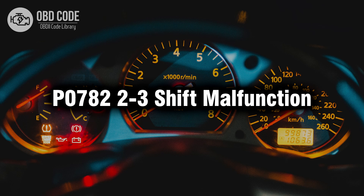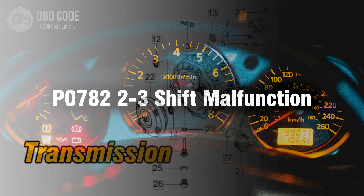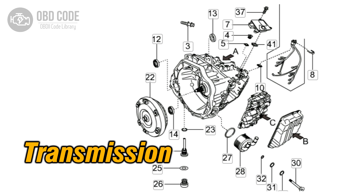Welcome. In this video we will talk about code P0782, its symptoms, causes and possible solutions. The P0782 trouble code indicates a malfunction specifically related to the 2-3 shift in the transmission. Here's what you should know.